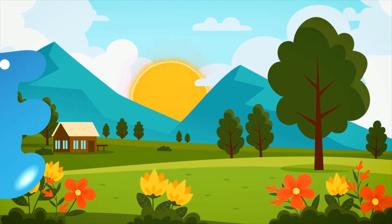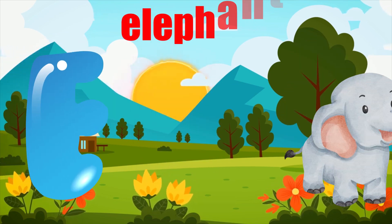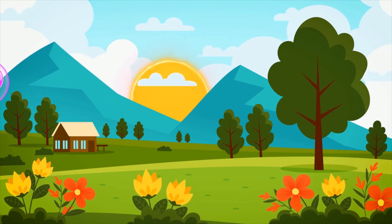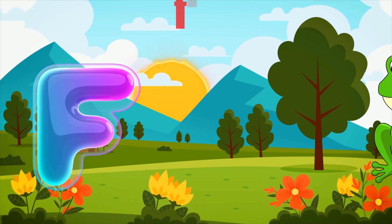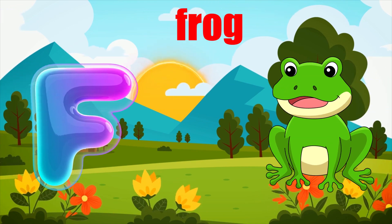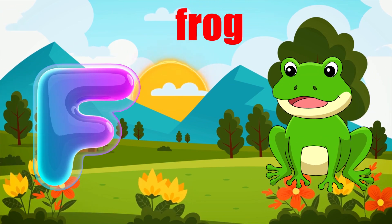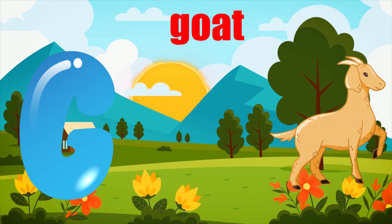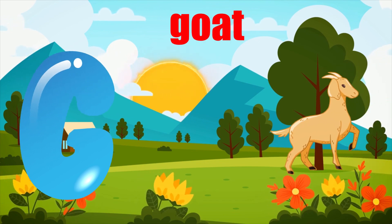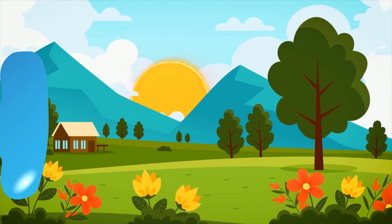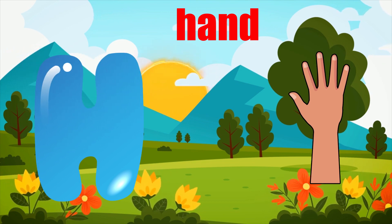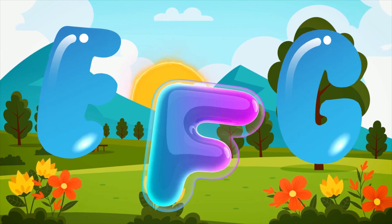E is for elephant, e-e-elephant. F is for frog, f-f-frog. G is for goat, g-g-goat. H is for hand, h-h-hand.